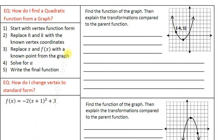Let's do an example. First one: find the function of the graph, then explain the transformations compared to the parent function. Here's our graph — we have a known point at negative four, one, and we also know the vertex. The vertex is at negative two, negative one.